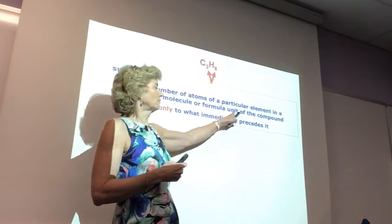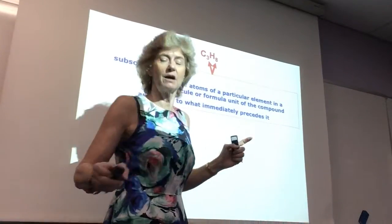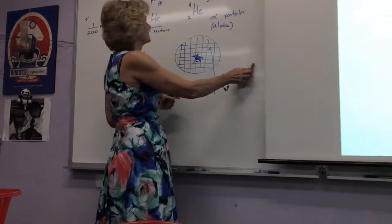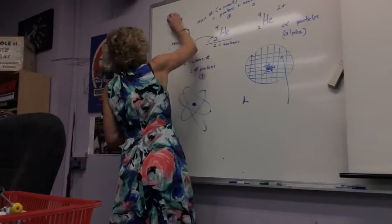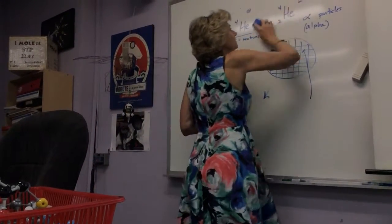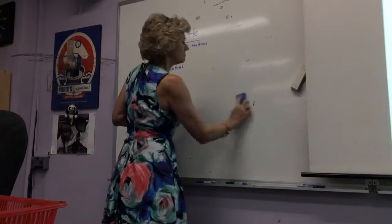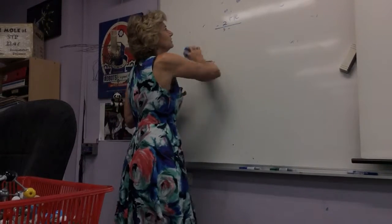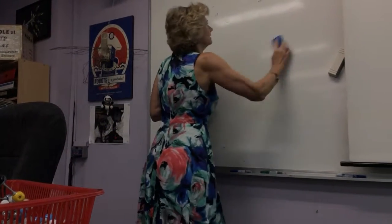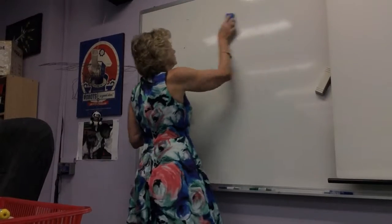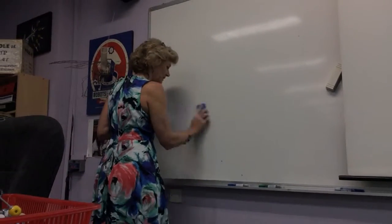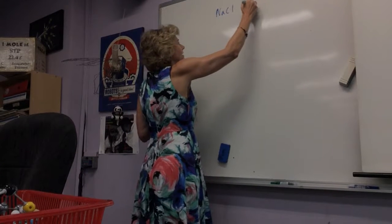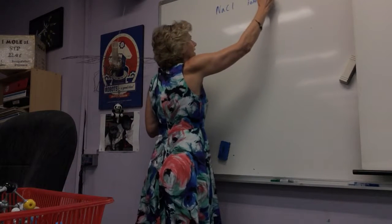Ionic compounds, base unit is called a formula unit. You know an ionic compound. I can guarantee all of you know this compound. Do you already know what it is? What's our go-to ionic compound? Sodium chloride, table salt. So sodium chloride is not a molecule. So we don't say a molecule of sodium chloride. The base unit is called a formula unit. So you already know one go-to formula unit of a binary compound.